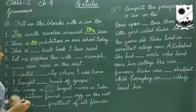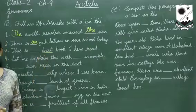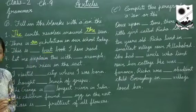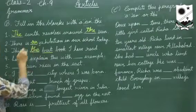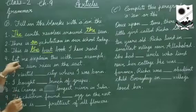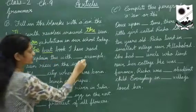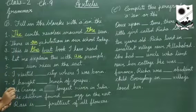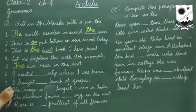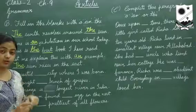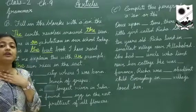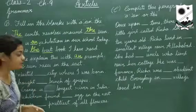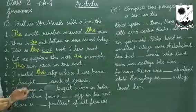Number three: 'This is dash best book I have read.' Best is a superlative form ending in -st, and with superlatives we use 'the': 'This is the best book I have ever read.' Number four: 'Let me explain this with dash example.' Example begins with a vowel, so 'an example'. Number five: 'The sun rises in the east.' Number six: 'I visited dash city where I was born.' I am talking about a particular city, so we use 'the': 'I visited the city where I was born.'